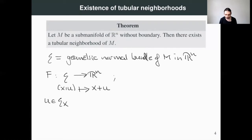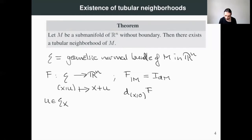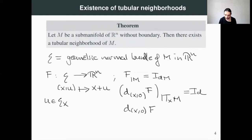The restriction of f to M, where we are identifying M with the zero section, is just the identity map. As a consequence, the differential at a point of the zero section of f restricted to the tangent space of M at x is just the identity. We also have that the differential of f at (x, 0) is the identity over the fiber of our vector bundle, and this map is just linear in u.